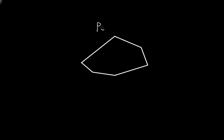Let's say we have some polygon here. This polygon is a little bit special — it's a convex polygon. If you don't know what a convex polygon is, I recommend you look at some of our older videos. Assuming you know what a convex and a concave polygon is, we can continue. This convex polygon has some number of sides of some lengths, and what we want to know is the sum of all of the interior angles of this polygon.